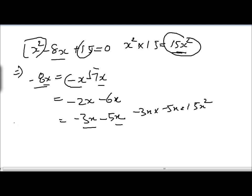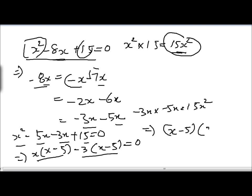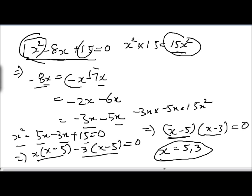So we write: x squared minus 5x minus 3x plus 15 equals 0. We take x common from the first two terms, giving x minus 5 in brackets. We take minus 3 common from the last two terms, also giving x minus 5 in brackets. Taking x minus 5 common from both groups gives x minus 3 in brackets, equal to 0. Setting each factor to zero: x equals 5 and x equals 3. This is the solution of the quadratic equation.